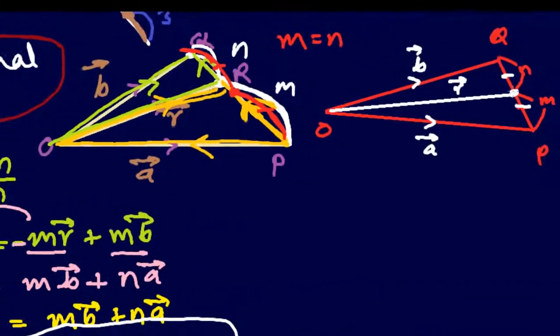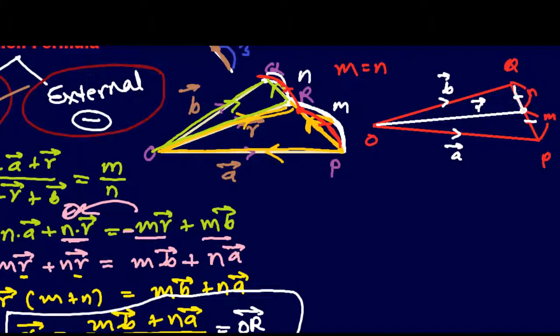And this time, this point of intersection is called the midpoint, because M and N means this is equal to this.